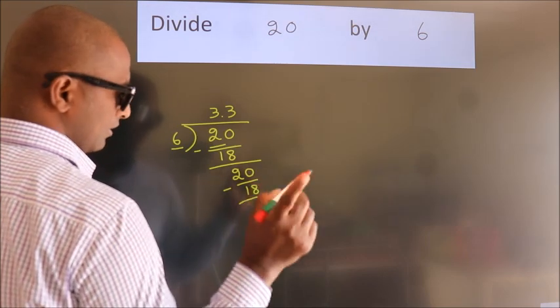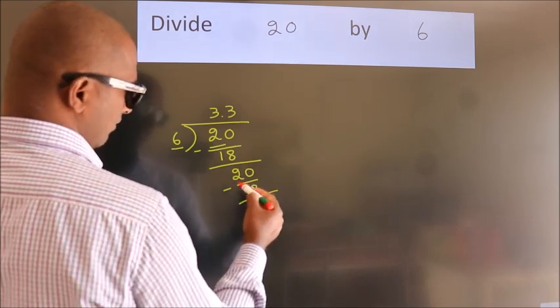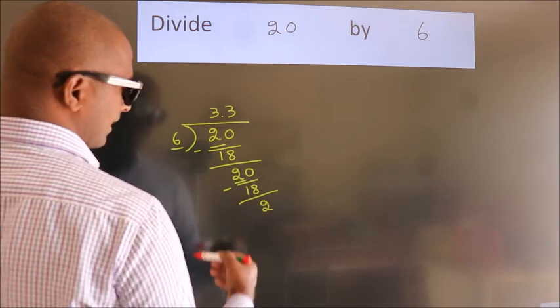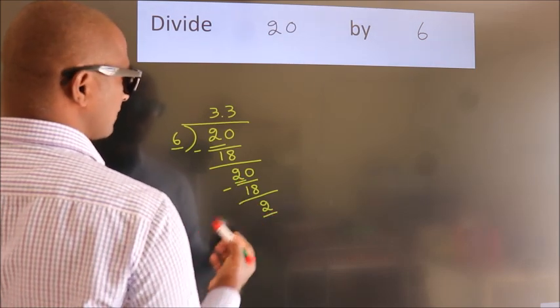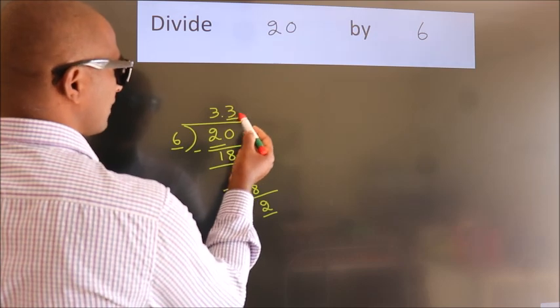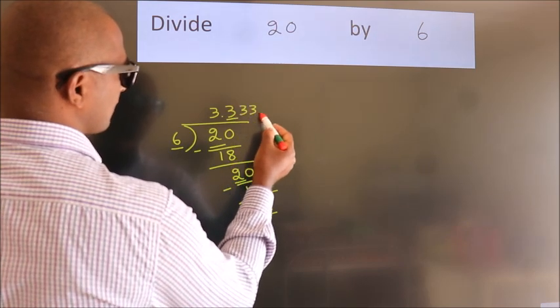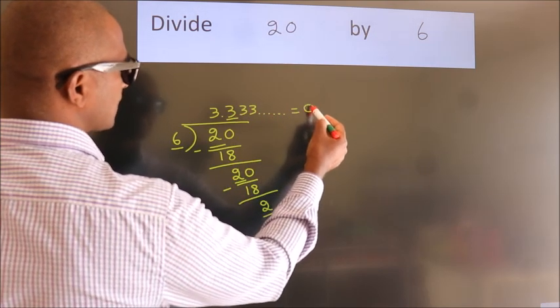Now, you observe. We had 2 here and we got 2 again. That means this number keeps on repeating. So, this is our quotient.